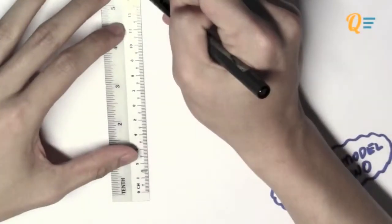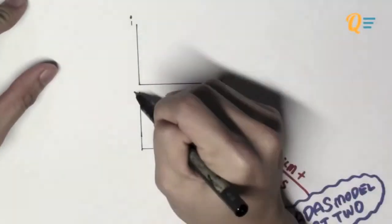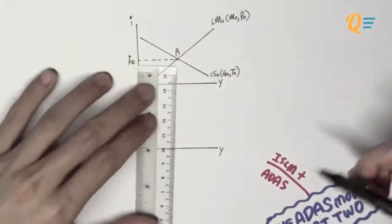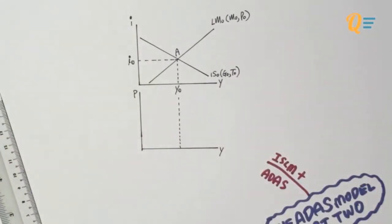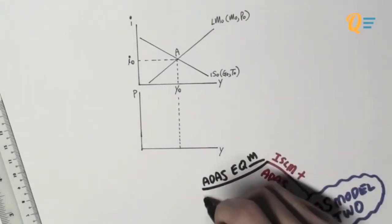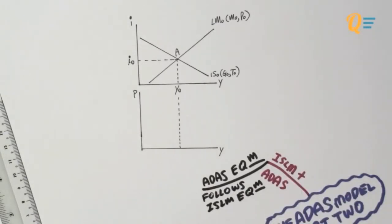So a simple rule of thumb is that the ADAS equilibrium is going to follow the ISLM equilibrium. Let me graphically show you what I mean. If an equilibrium in the ISLM model is going to create an equilibrium output of Y0, what happens is that the equilibrium output in the ADAS model is also going to be Y0. So that is what I mean by the ADAS equilibrium is going to follow the ISLM equilibrium.